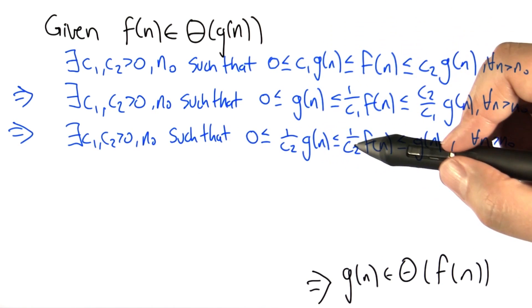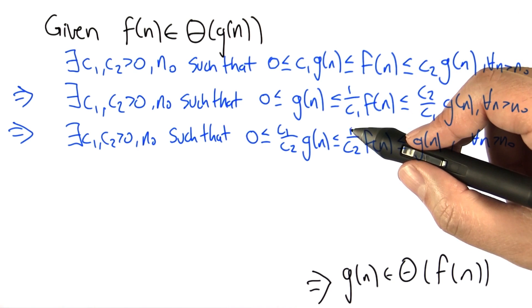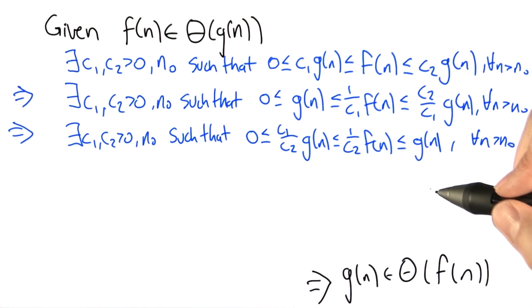We can do that same trick again, dividing through this equation by c2, and we see that 1 over c2 of f of n is less than or equal to g of n.